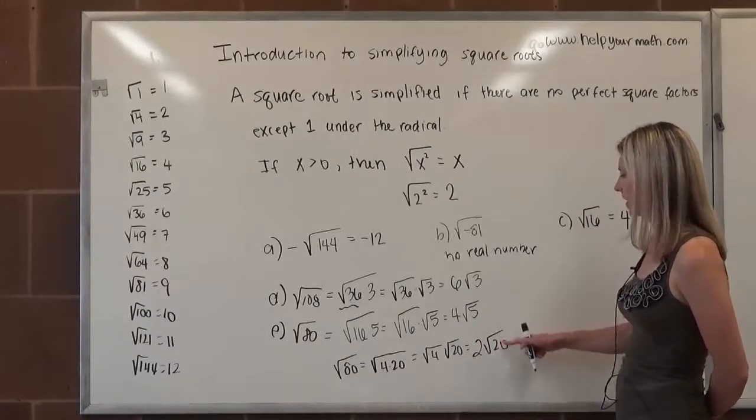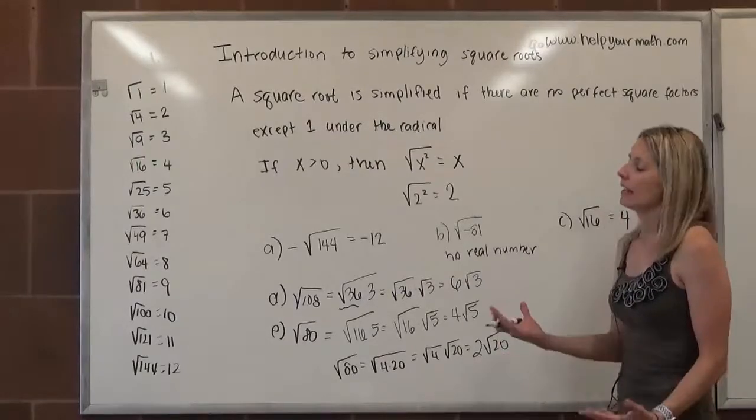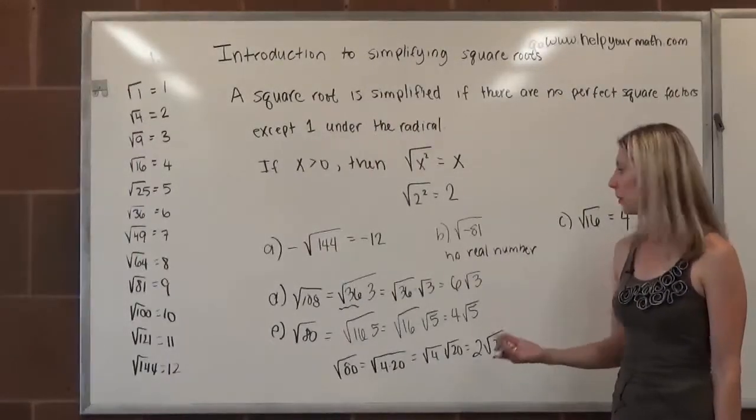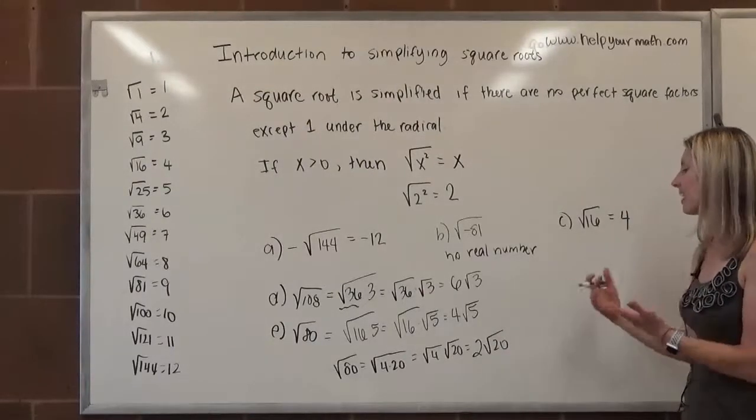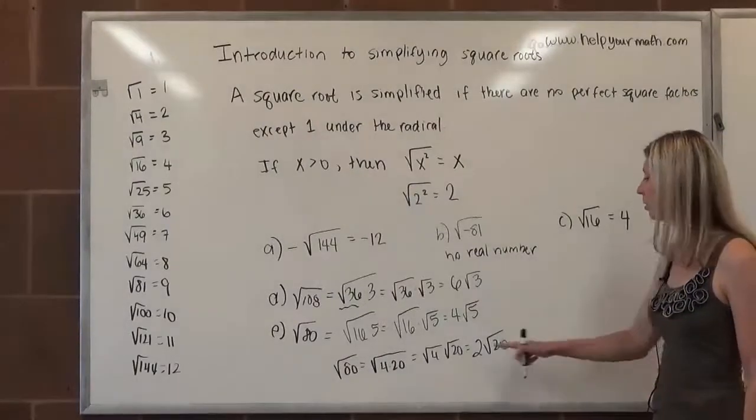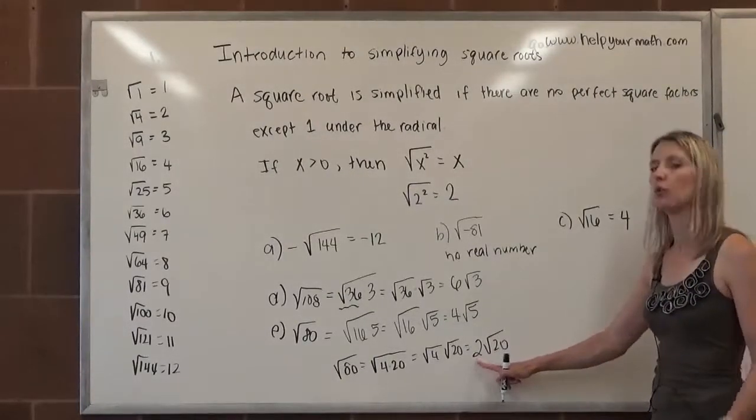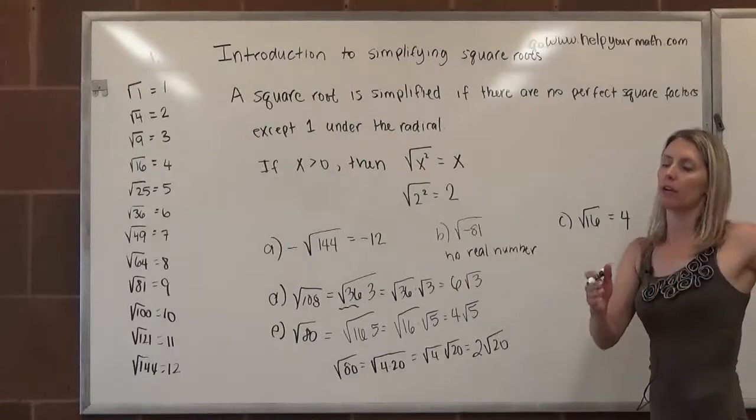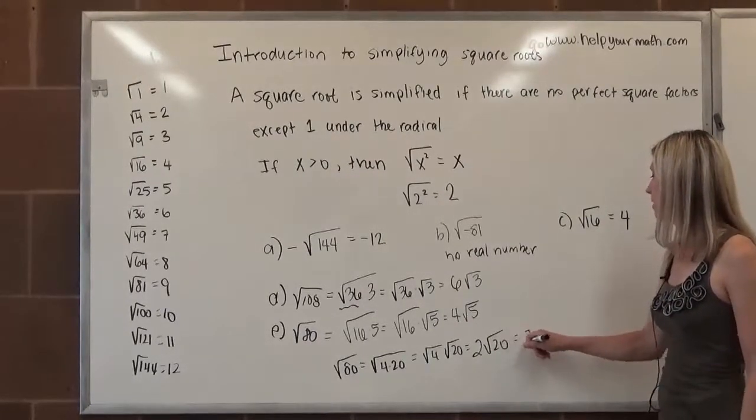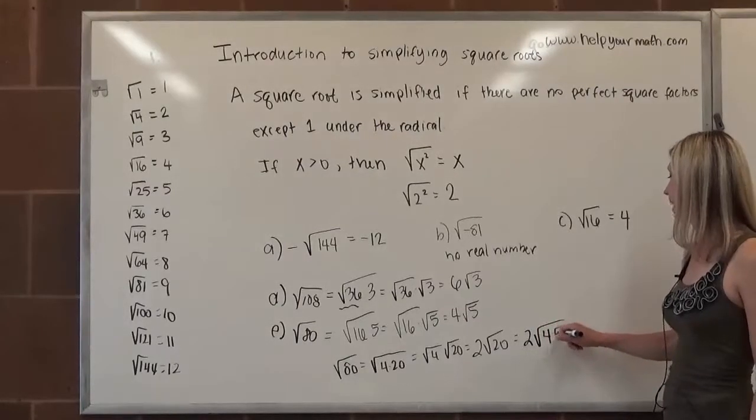Wait, that doesn't look like that. So is this wrong? It's not wrong, but 20 still has a perfect square factor. 20 is divisible by 4 as well. So we're just not done yet. What you would have to do is you would have to repeat the process of simplifying the radical. The coefficient, the 2, you just kind of keep bringing it over. It's not affected when you're simplifying this piece of it. So we would say, I can rewrite 20 as 4 times 5.